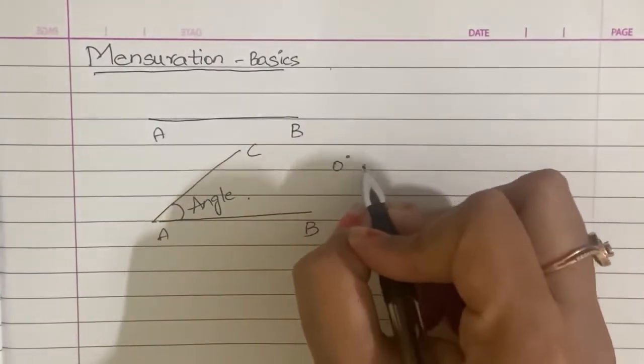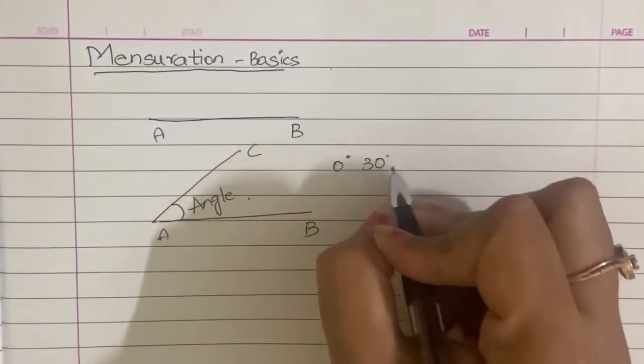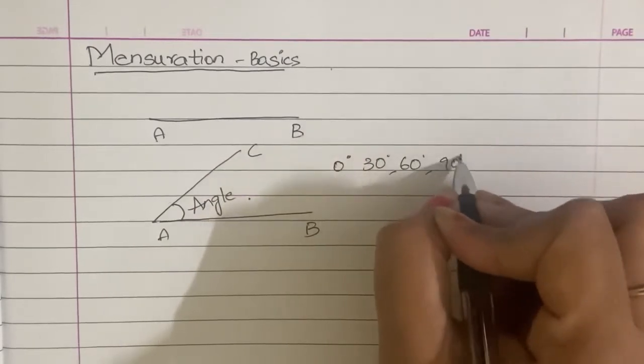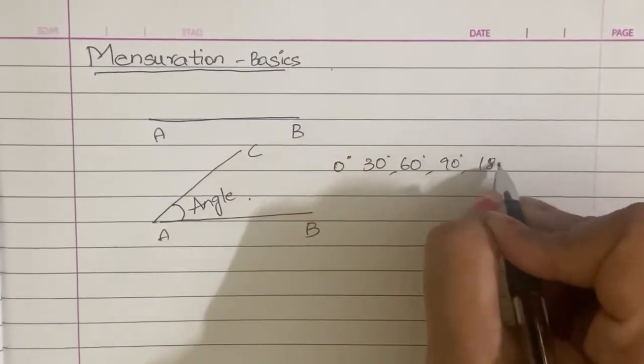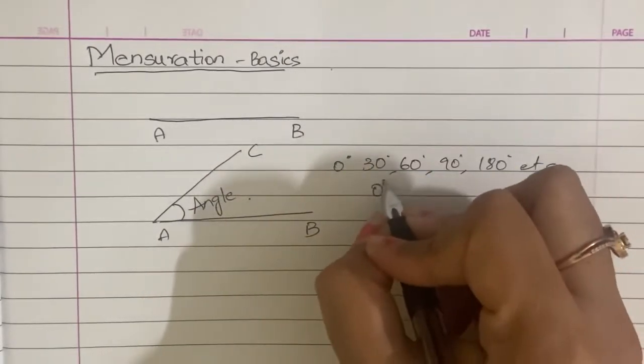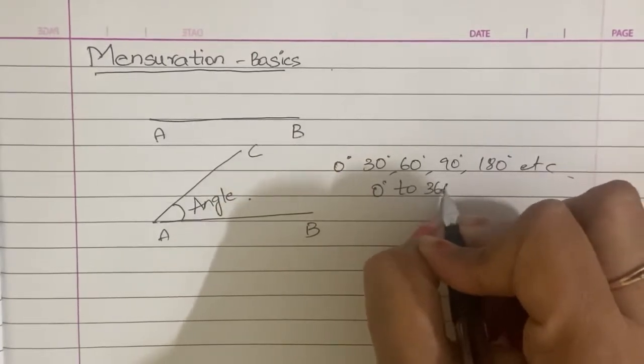I will show you 0 degrees, 30 degrees, 60 degrees, 90 degrees, 180 degrees, and so on. I will show you the angle from 0 to 360 degrees.